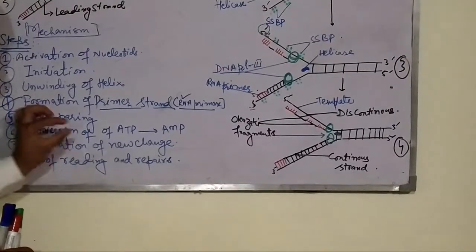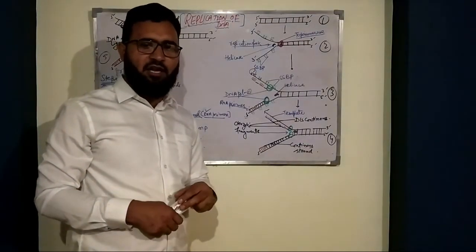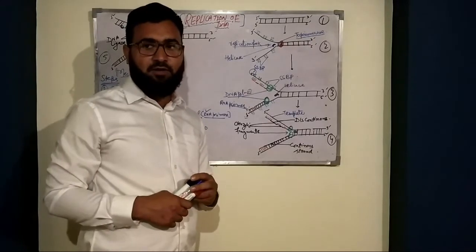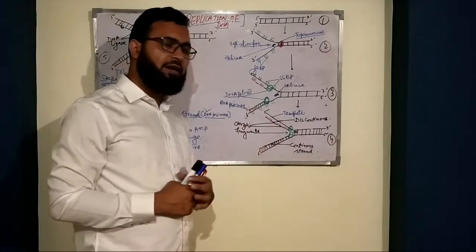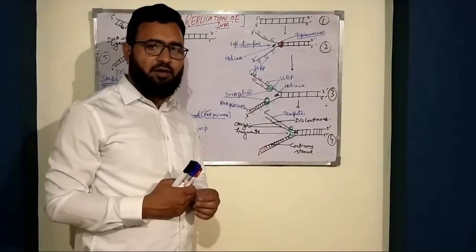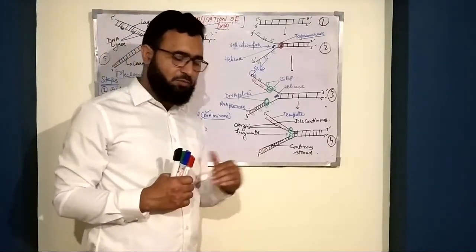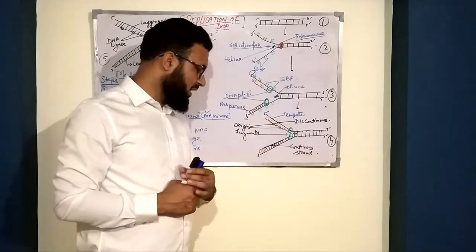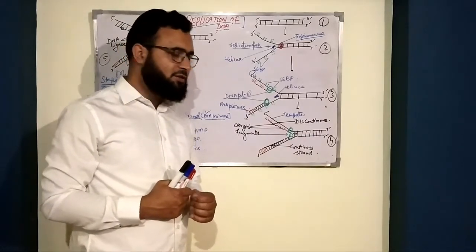In step four, we see the formation of new chains. A short-answer or objective-type question can be asked: what are the two chains synthesized during DNA replication? There are two types: one is the continuous strand, also called the leading strand, and the other is the discontinuous strand, also called the lagging strand. The difference is that the leading strand is continuously synthesized by DNA polymerase, while the lagging strand is synthesized only in fragments.